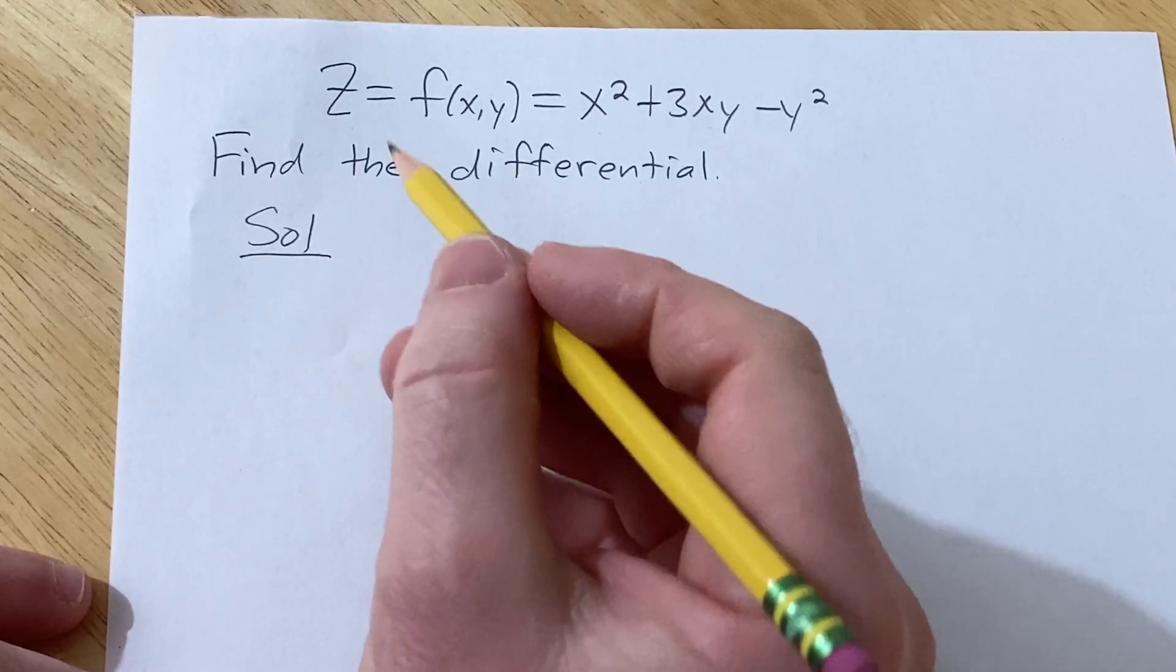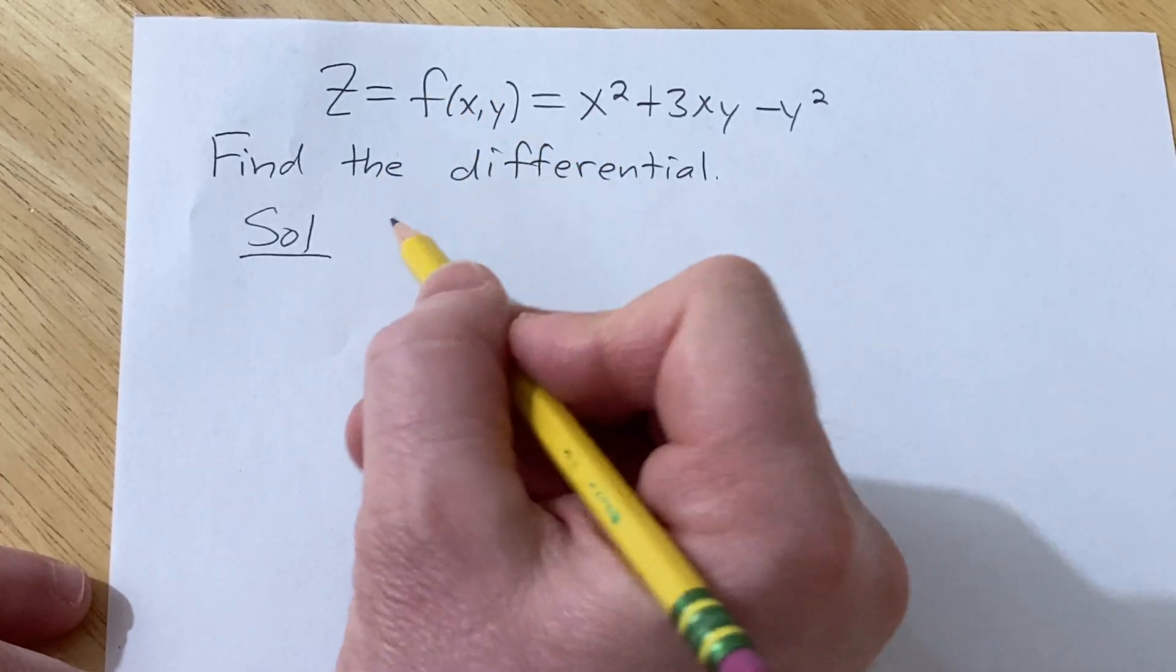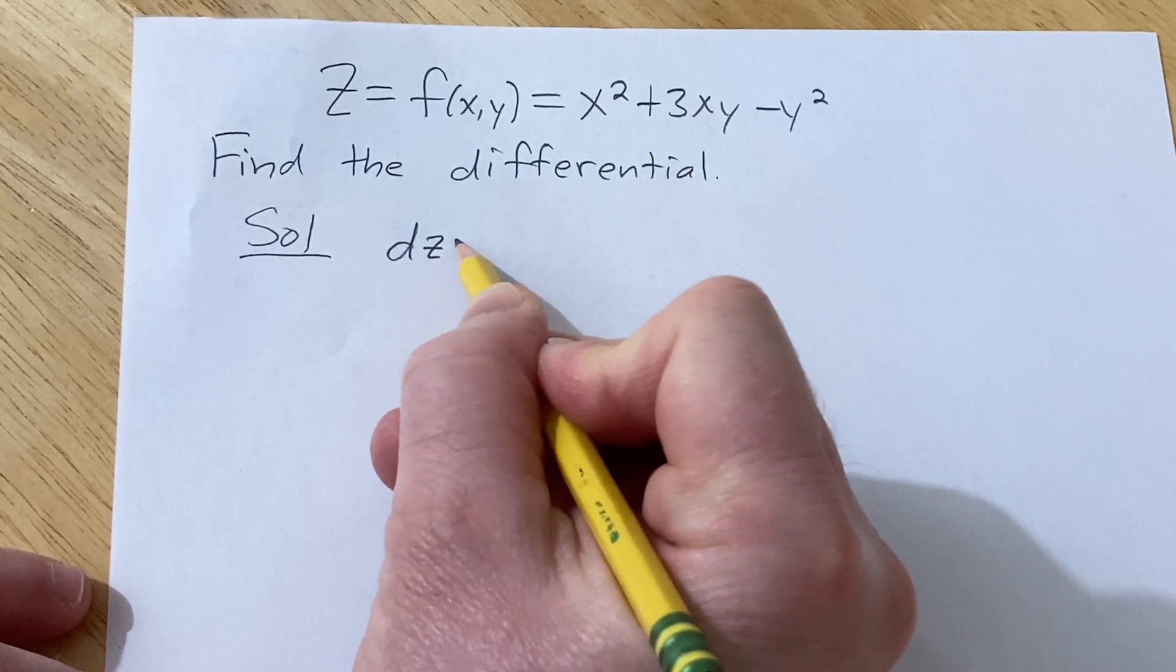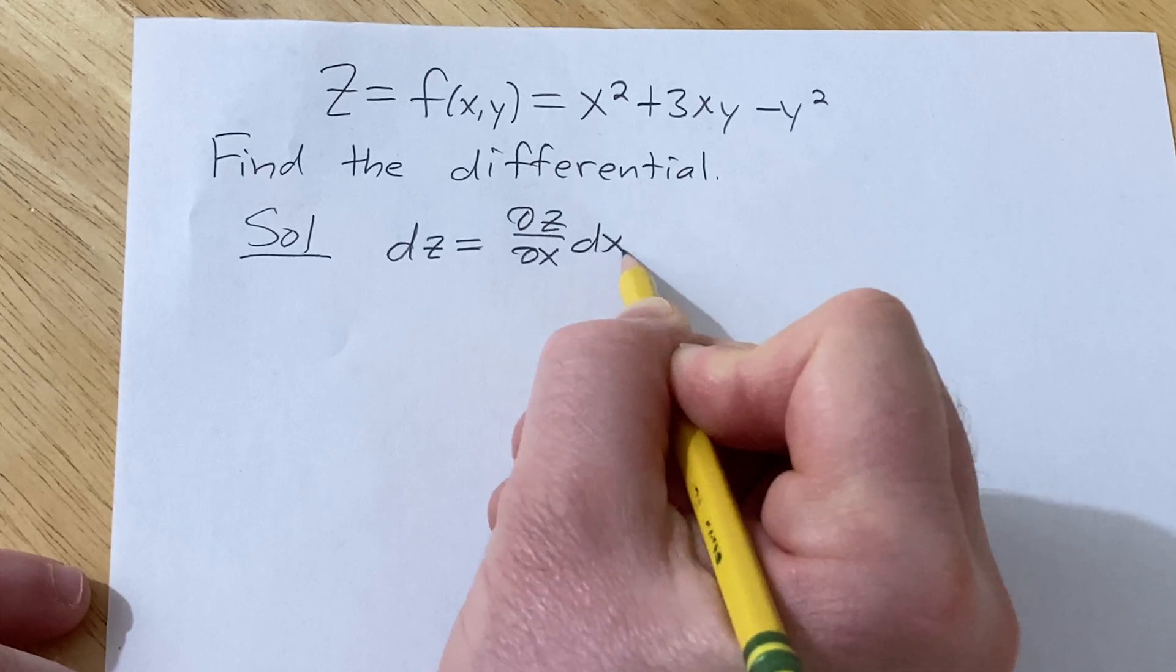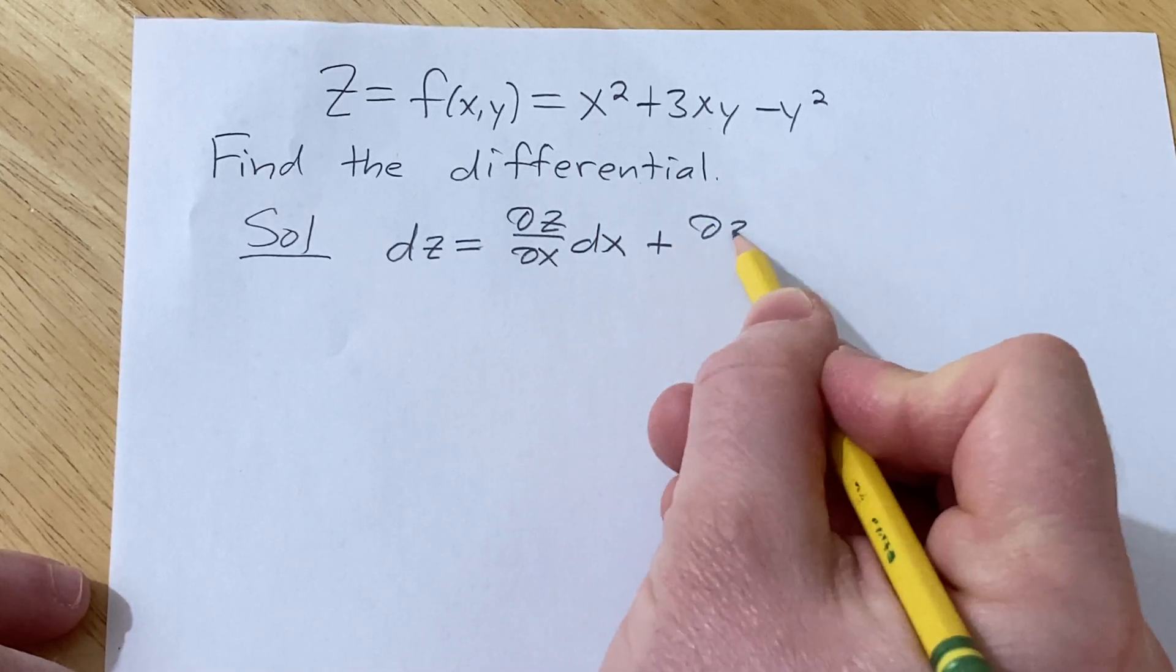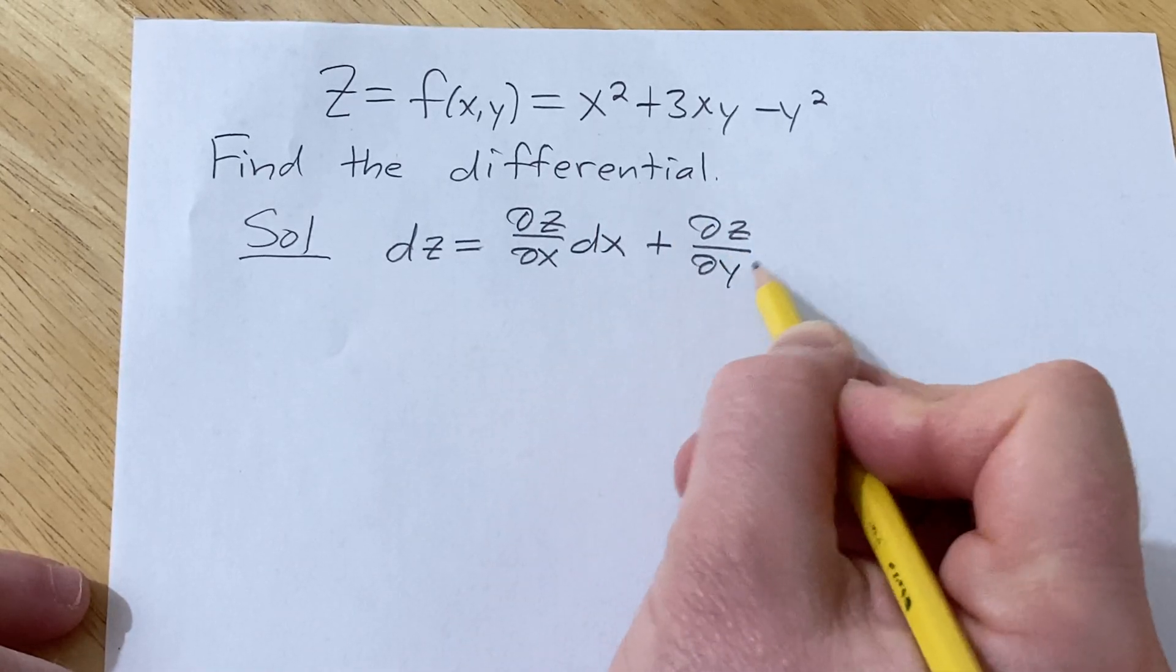So to find the differential, we're just going to use a formula. The formula says dz is equal to ∂z/∂x dx plus ∂z/∂y dy.